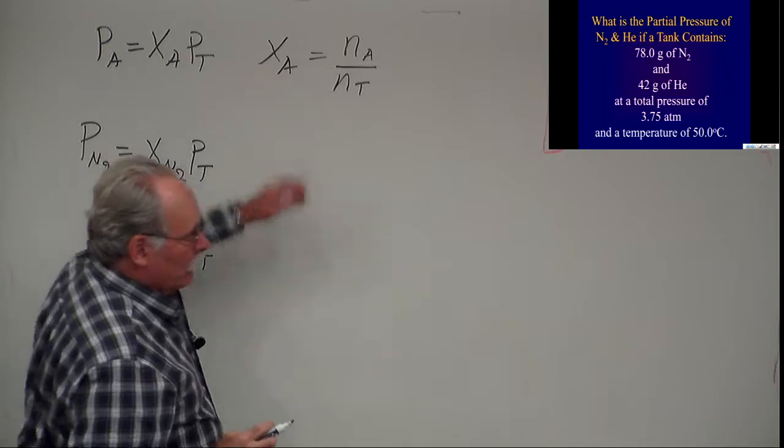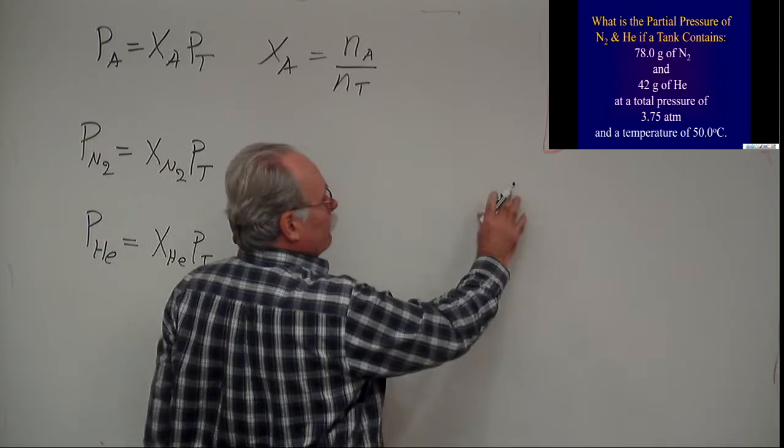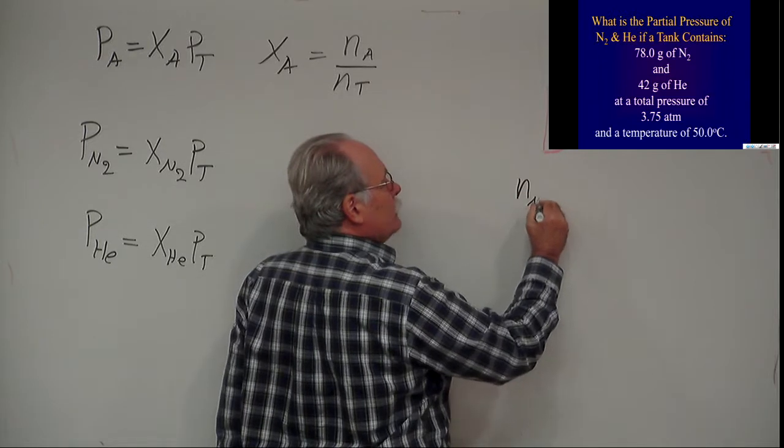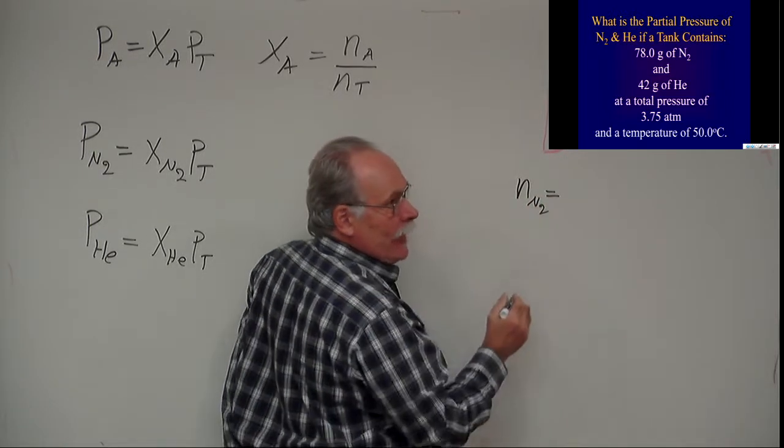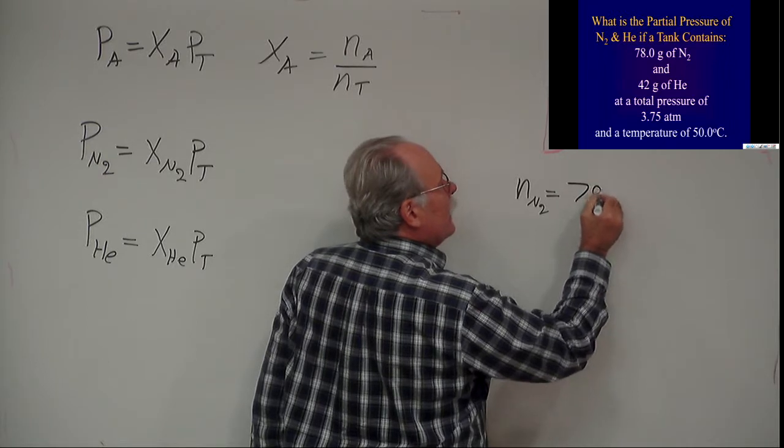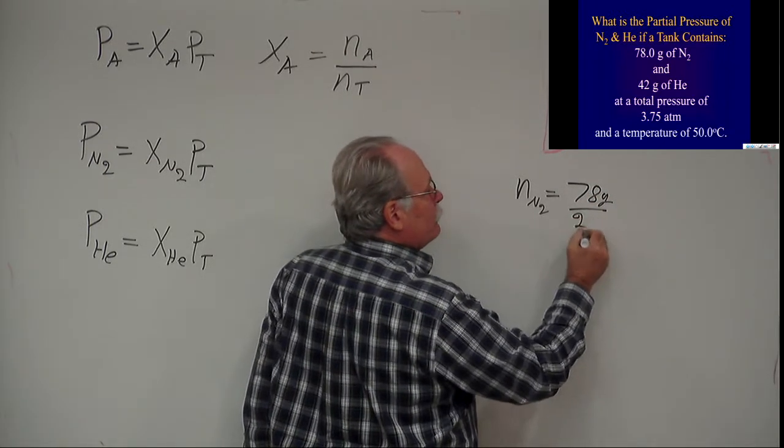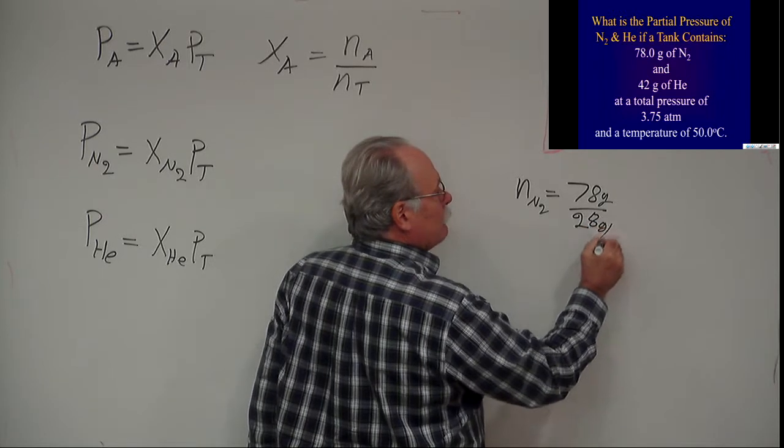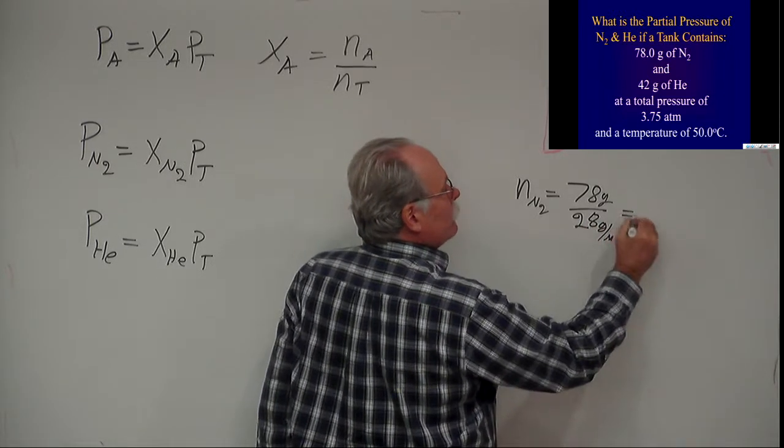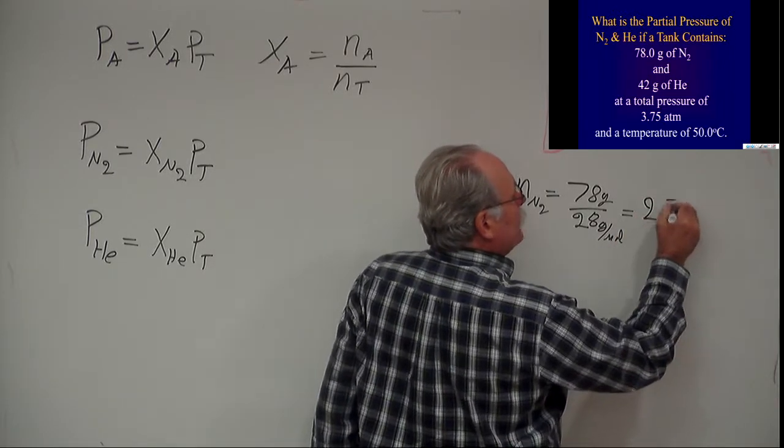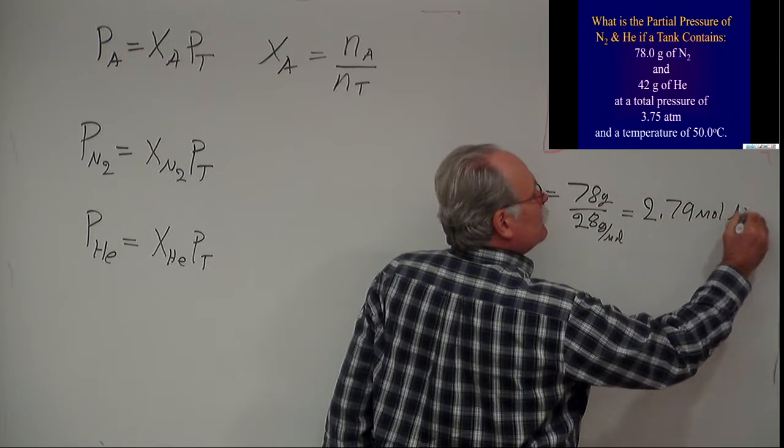So we now need to calculate the moles of each gas, starting with nitrogen. The moles of N2 equals the mass of nitrogen we have, which is 78 grams, divided by the formula weight of nitrogen, which is 28 grams per mole, and I get 2.79 moles of N2.